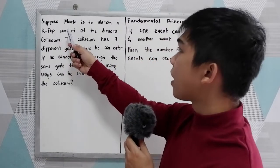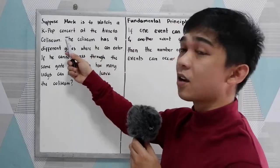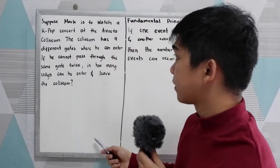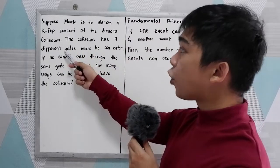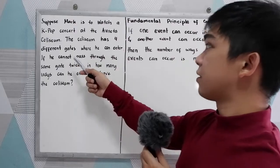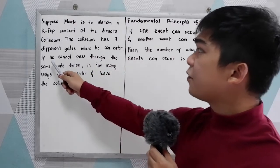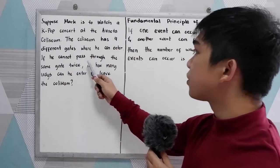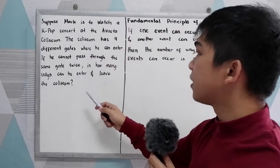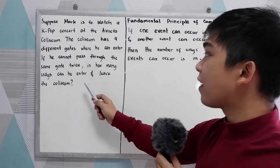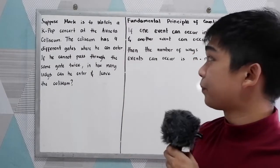Suppose Mark is to watch a K-pop concert at the Araneta Coliseum. The Coliseum has four different gates where he can enter. If he cannot pass through the same gate twice, in how many ways can he enter and leave the Coliseum?